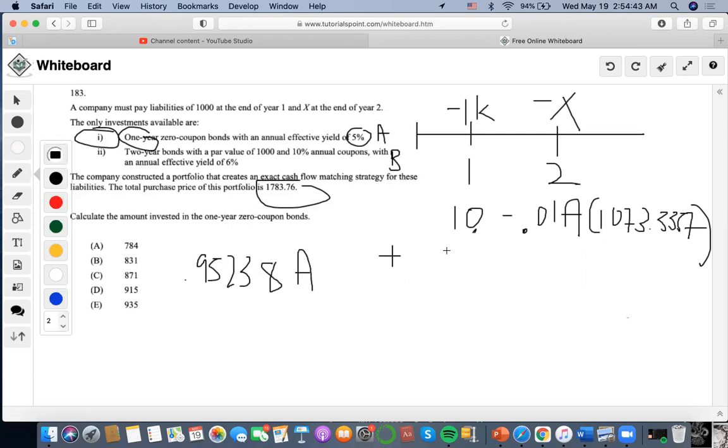Now we'll just solve. I'm gonna distribute this. I'm gonna do 1073.3357 times 10, which is 10733.357, times 0.01, which is minus 10.733357A.